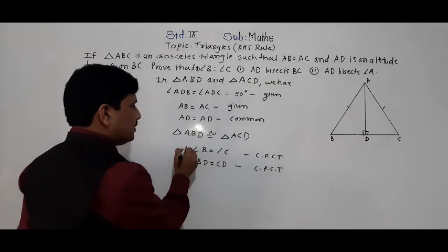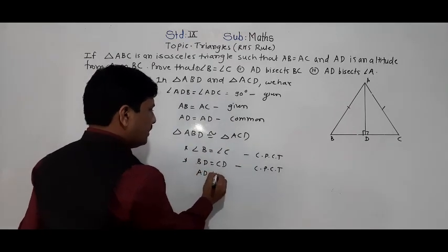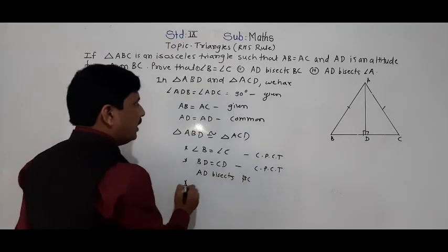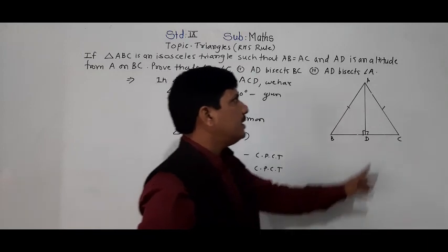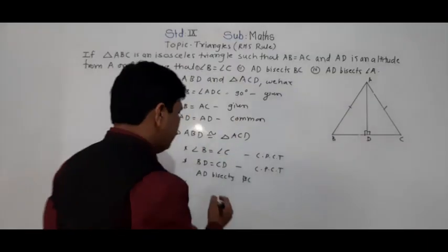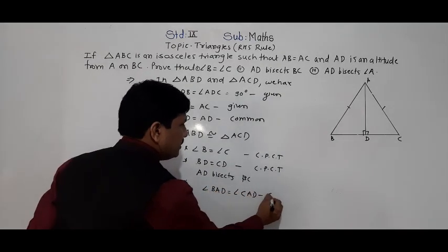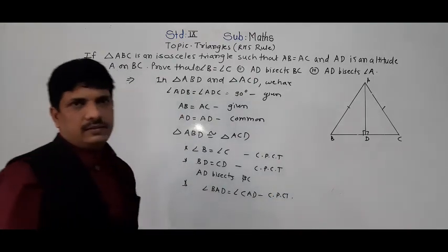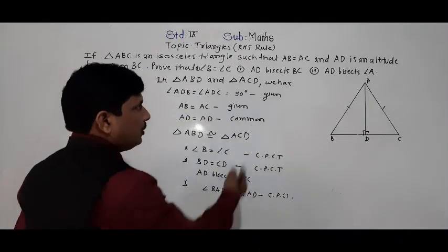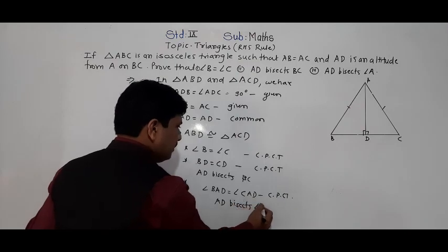BD is equal to CD, which means AD bisects BC — that is the second result. And the third: AD bisects angle A, so angle BAD is equal to angle CAD. This is also by CPCT, as they are corresponding angles of congruent triangles. So by CPCT, AD bisects angle A.